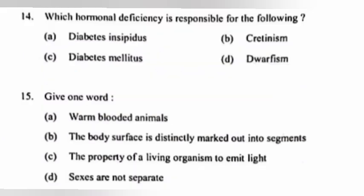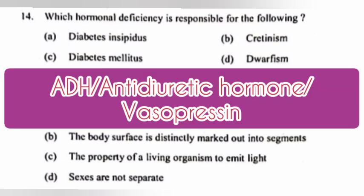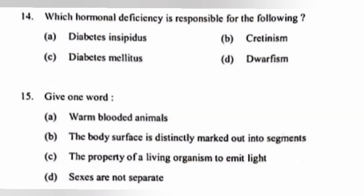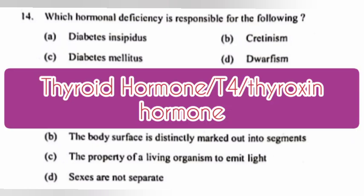Question 14. Which hormonal deficiency is responsible for the following? A. Diabetes insipidus. Answer: ADH, anti-diuretic hormone or vasopressin. B. Cretinism. Answer: Thyroid hormone or thyroxine (T4).